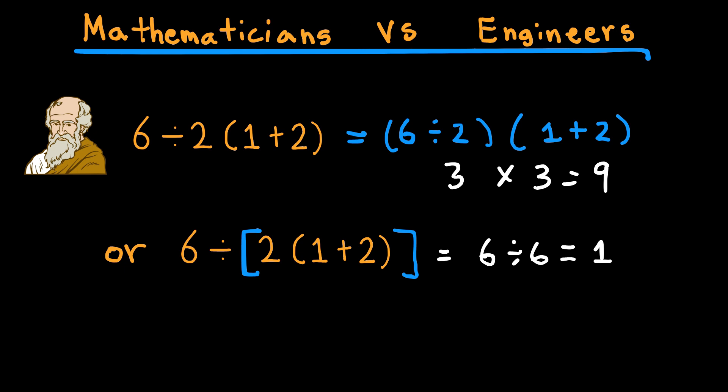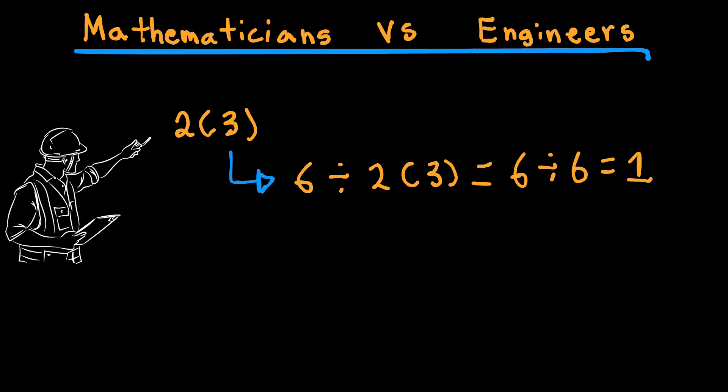But engineers are trained to read expressions more practically. Some might default to reading 2 parenthesis 3 parenthesis as one block, meaning they multiply it before dividing. So they'd say 6 divided 2, open parenthesis 3, closed parenthesis will equal 6 divided by 6 equals 1.